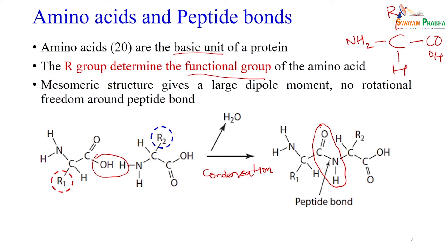Looking at amino acids: the amine group is positively charged and the carboxylic acid is negatively charged. The R group may be polar, non-polar, acidic, or basic. This gives a zwitterionic structure to amino acids which may have a dipole moment, but they do not rotate around the peptide bond — they may have different orientations.